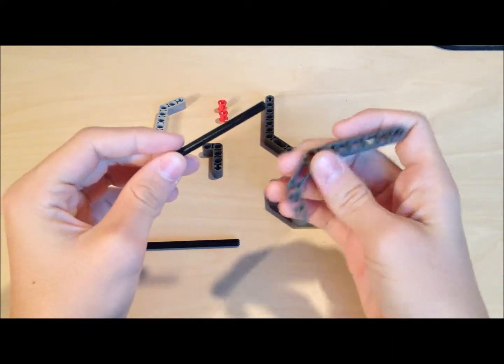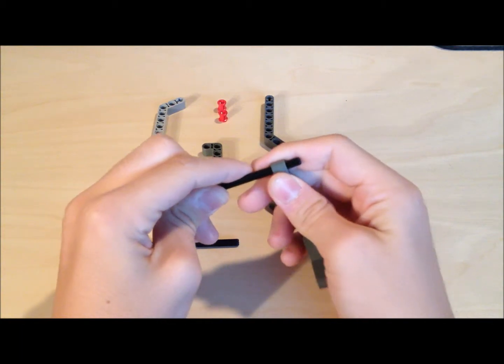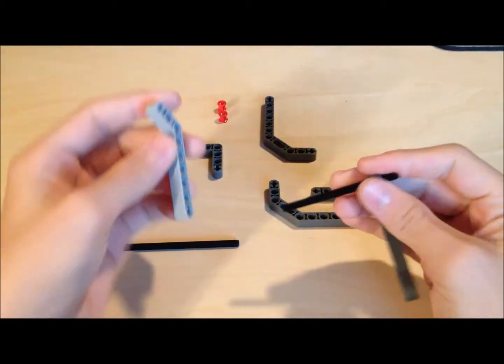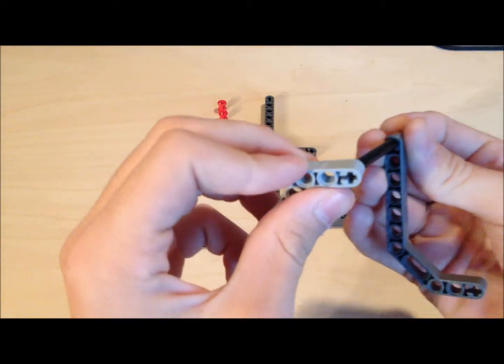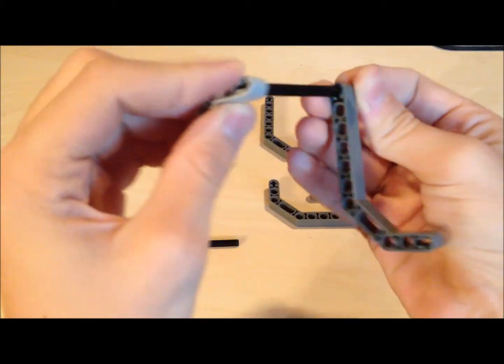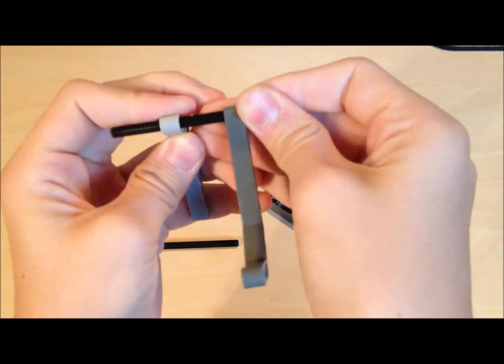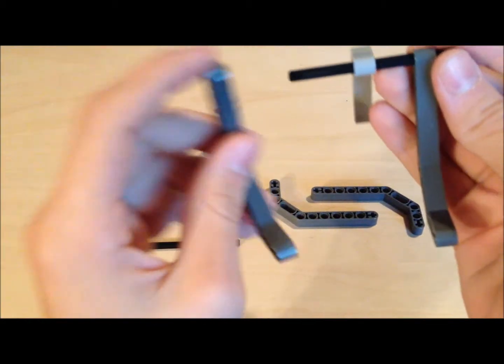Then take this angle piece and put the slanted side like that on the plus rod. Put it in the middle, and then you want to take another angle piece.